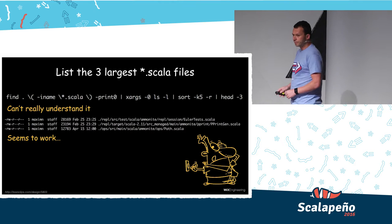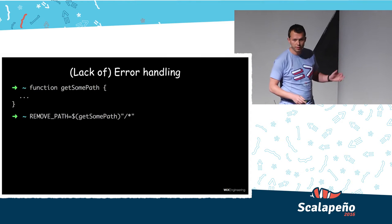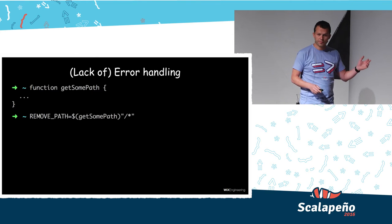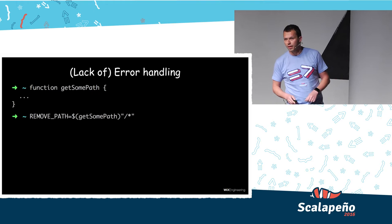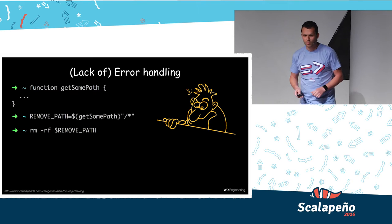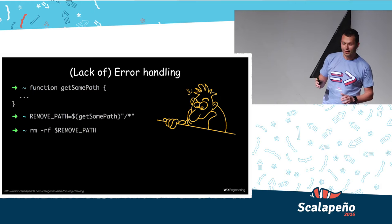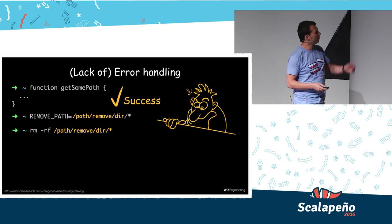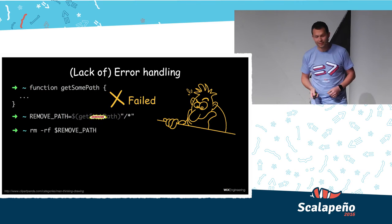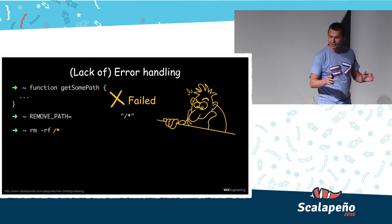Let's talk about something else: error handling, or the lack of it. In this example, we have a function that should return some path, and then a variable that is the concatenation of the result of the function and slash-star. The next command in the script will be rm -rf on that path. In case of success, we remove everything under the path the function returned. But in case of failure, it will fail silently, and we will remove our root directory — which, of course, wasn't the intention of this script.